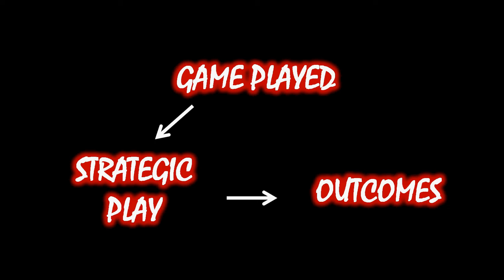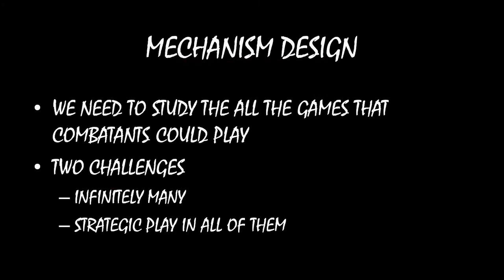We might see peace where we had war previously, or we might see war where we had peace previously. The study of figuring out how to properly design an institution to get what you want it to do is called mechanism design. But there's a big challenge here: we need to study all the different types of negotiation games that combatants could play. If we're trying to figure out what is best for society as a whole, that means we have to cover every single different type of negotiation game out there. There are two clear challenges: one, there are infinitely many such negotiation games, and two, we know that strategic play is itself a function of the game being played, so we can't just create an institution and immediately understand how players are going to behave in it.